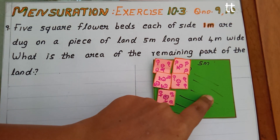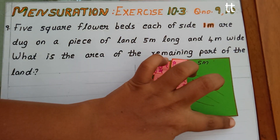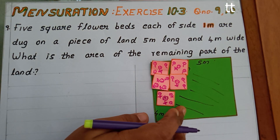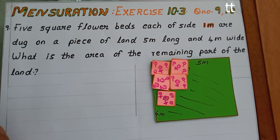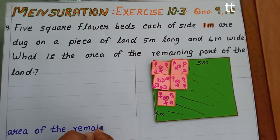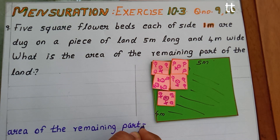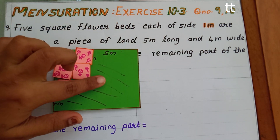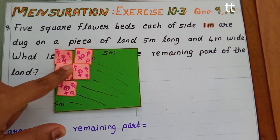To find the area of this shaded portion, we have to find the area of the whole land and the area of the flower beds. We can write: area of the remaining part equals area of the land minus area of the square flower beds.